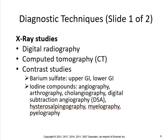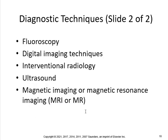Contrast studies include barium sulfate for upper GI and lower GI, and iodine compounds used in angiography, arthrography, cholangiography, digital subtraction angiography, hysterosalpingography, myelography, and pyelography. Make sure you know what a myelography is. Other modalities include fluoroscopy, digital imaging, interventional radiology, ultrasound, and MRI.